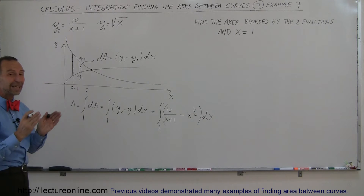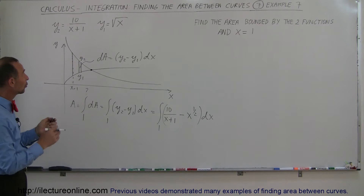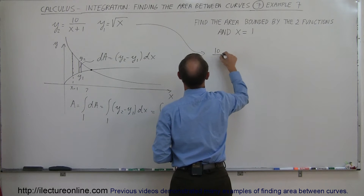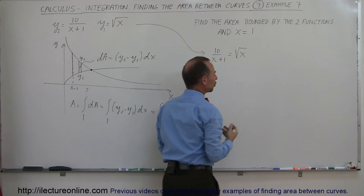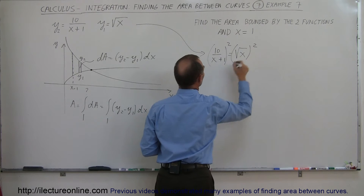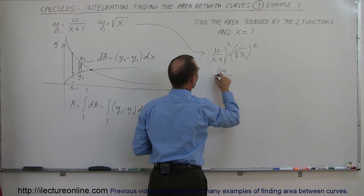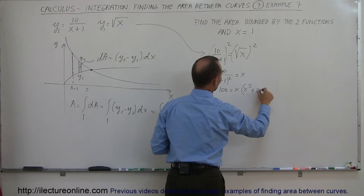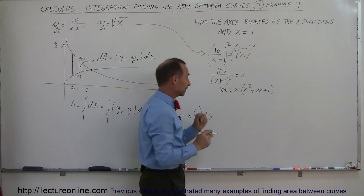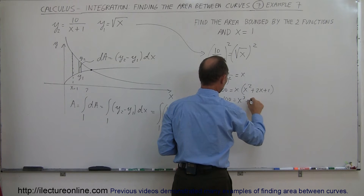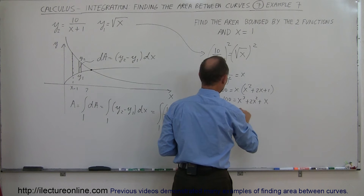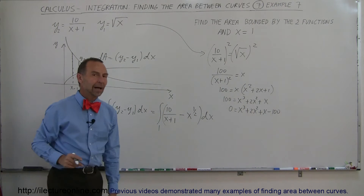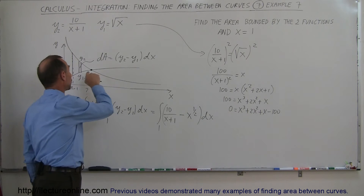We have to solve those two equations simultaneously to find where the other limit will be. Let's set y1 and y2 equal to each other: 10 over (x+1) equals the square root of x. Squaring both sides gives 100 divided by (x+1) squared equals x, so 100 equals x times (x+1) squared, which expands to x cubed plus 2x squared plus x. Bringing the 100 across gives 0 equals x cubed plus 2x squared plus x minus 100. We have a cubic equation and need to find its root.